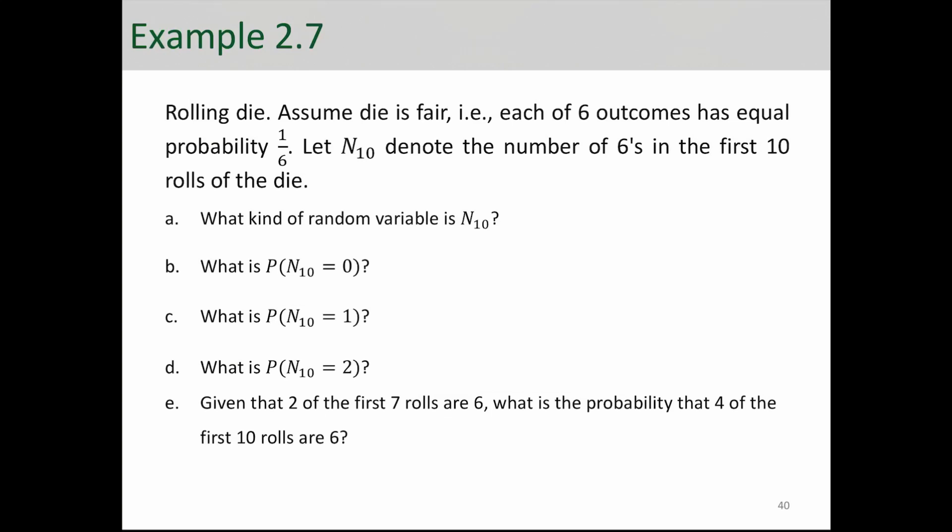Hello everyone, in this video we're going to look at a couple examples on binomial random variable. In this one it says rolling a die, assume die is fair and each of six outcomes has equal probability of 1 over 6, and let n10 denote the number of sixes in the first 10 rolls of the die.